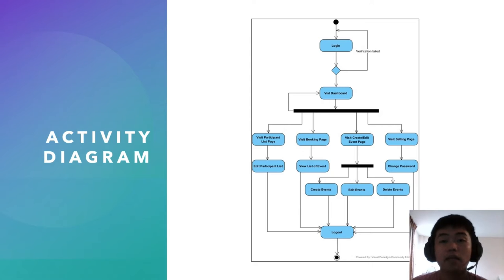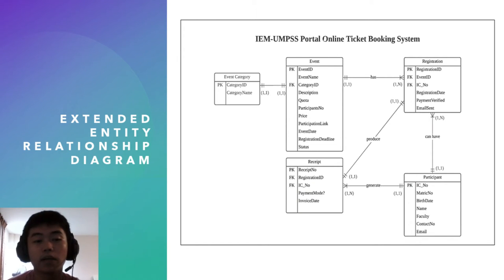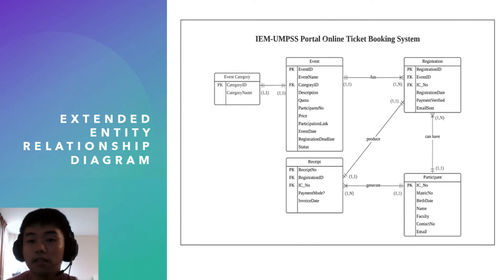After all, the admin can log out of the system. For the extended entity relationship diagram, we can see that there are five entities in this IEM-UMPSS portal online ticket booking system.